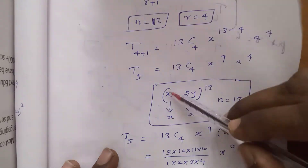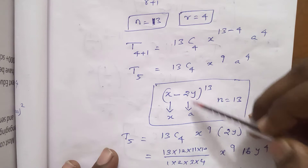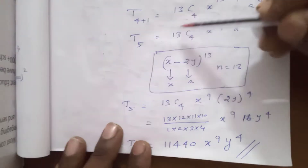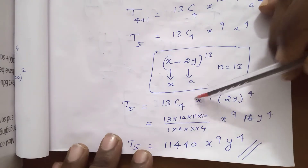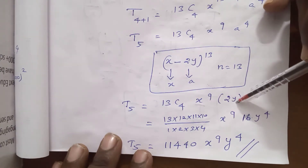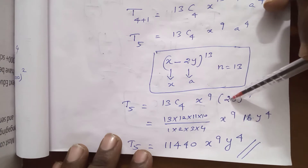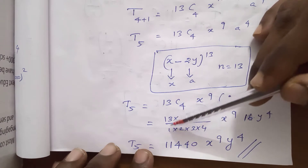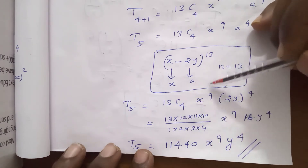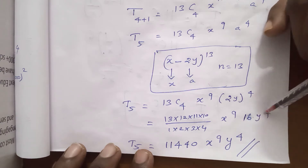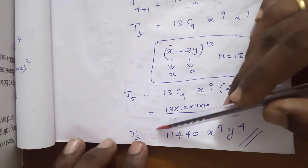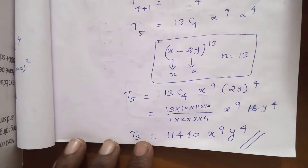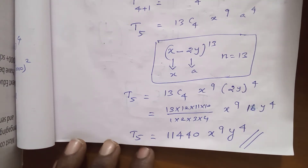In this problem, x is x and a is replaced by 2y. So T5 = 13C4 · x^9 · (2y)^4. Now 13C4 = (13×12×11×10)/(1×2×3×4) and (2y)^4 = 16y^4. The final answer is T5 = 1716 · x^9 · y^4.